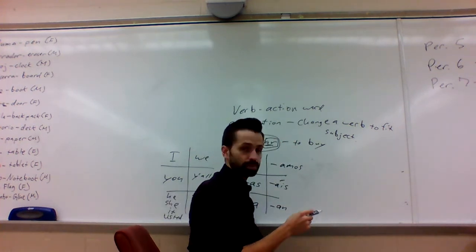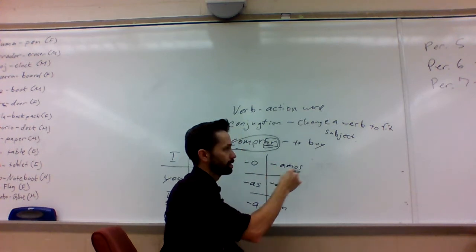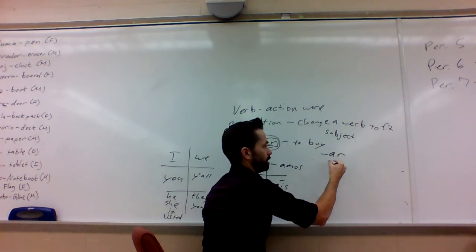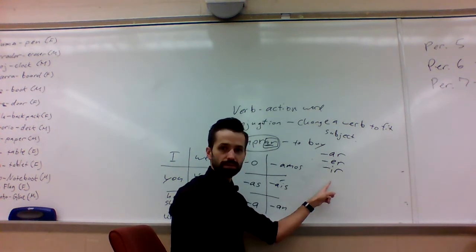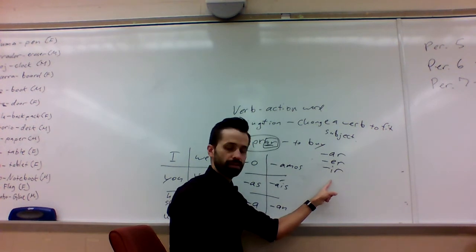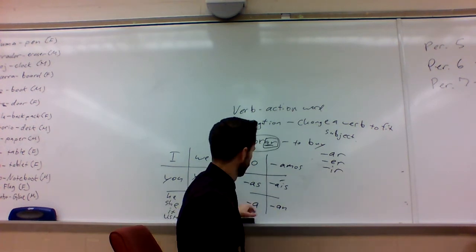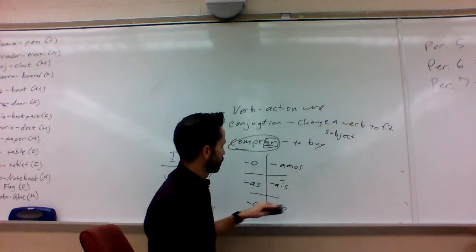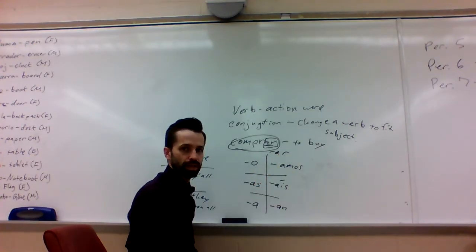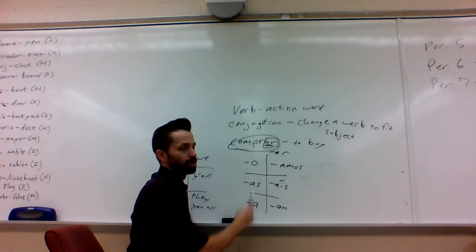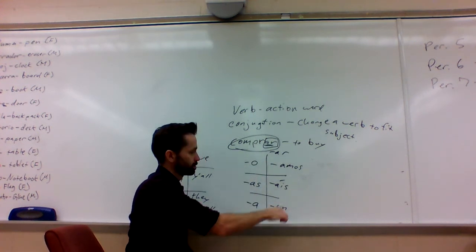All right, a couple things to note. In Spanish, all verbs end in either AR, ER, or IR. There's just these three types of endings. If a word ends in this, it's like 99% positive that it's a verb. Write this chart down, this one is for AR verbs. So if the verb ends in AR, like in your vocabulary list, it's going to use these suffixes.